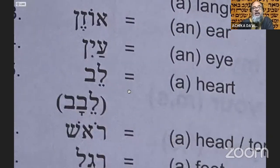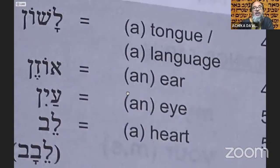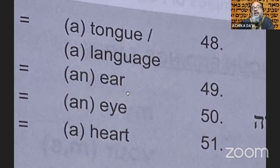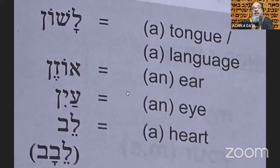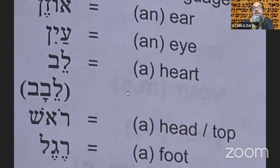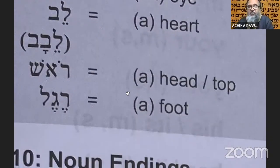Then I come back and cover that up. So when I say lishon I know what I'm talking about — tongue is also language. So I go lishon, ozen, ayin, lavav — going from the bottom up — and you just do it that way. Put some music to it, put a song to it, it'd be great for you.